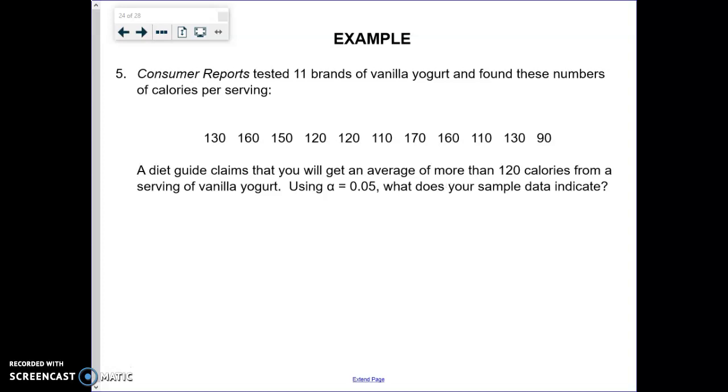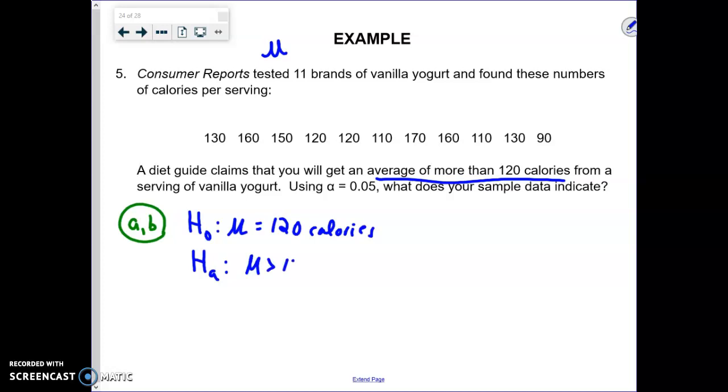So ladies and gentlemen, the first thing we're going to do is determine what parameter we're using. We're going to use a population mean. Then we're going to set up the null and alternative hypotheses. The null would be that the average amount per serving would be 120 calories. Remember, the null always contains the condition of equality. The alternative comes from the claim by the diet guide—it says that it's an average of more than 120 calories, that the mean is greater than 120 calories. And part C is the significance level, which is 0.05.